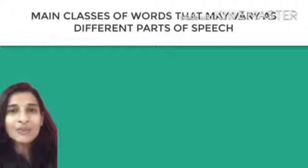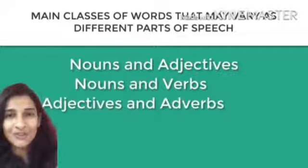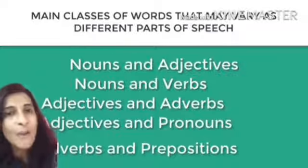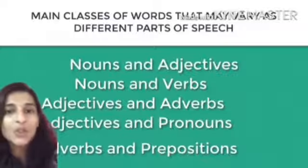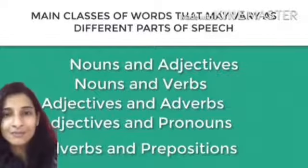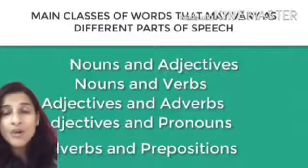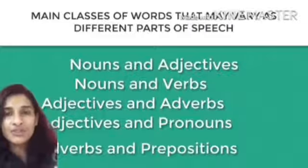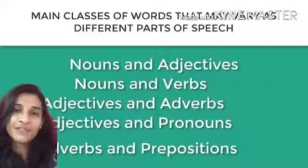Now let me tell you the main classes of words that may vary as different parts of speech. First, nouns and adjectives — when the position of these words changes in a sentence, their part of speech may also change. Then nouns and verbs — the same word can act as a noun or a verb, as with 'water.' Then adverbs and adjectives, adjectives and pronouns, and finally adverbs and prepositions. Let's check them out one by one.